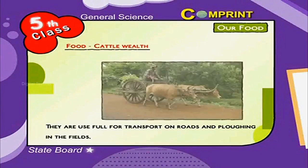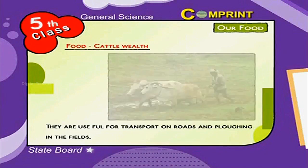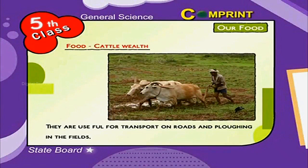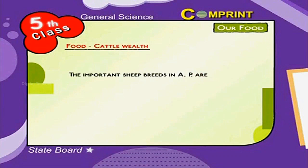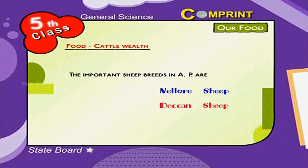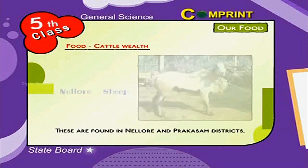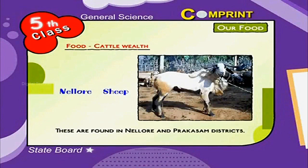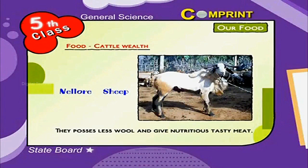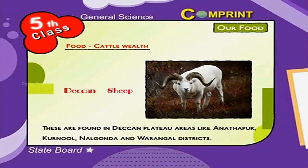Bulls are useful for transport on roads and ploughing in fields. The important sheep breeds in Andhra Pradesh are Nellore sheep and Deccan sheep. Nellore sheep are found in Nellore and Prakasham districts; they have less wool but give nutritious tasty meat. Deccan sheep are found in Deccan Plateau areas like Anantapur, Kurnool, Nalgonda and Warangal districts.